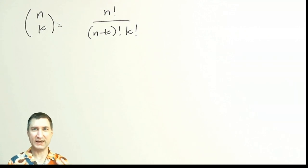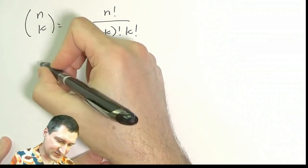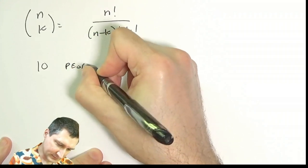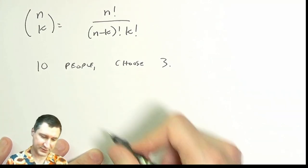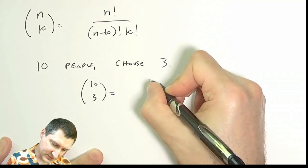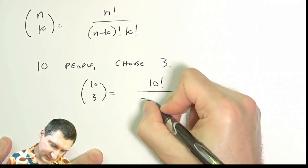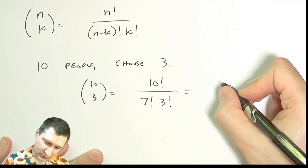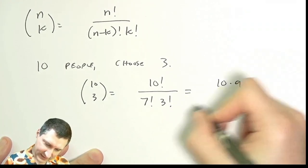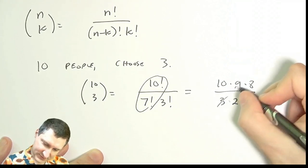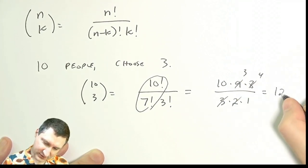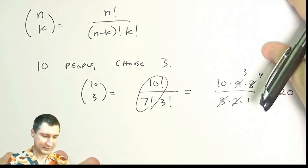So n choose k equals n factorial over (n minus k factorial times k factorial). For example, choosing 3 people for a team project out of 10, where order doesn't matter: 10 choose 3 equals 10 factorial over 7 factorial times 3 factorial. That simplifies to 10 times 9 times 8 divided by 3 times 2 times 1, which equals 120 possible three-person teams.